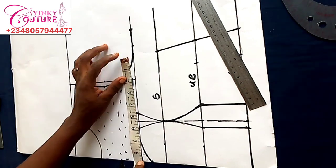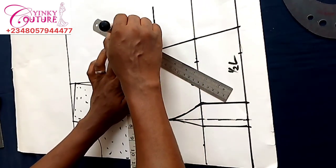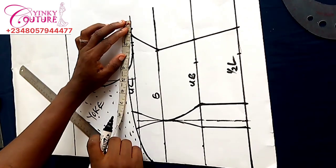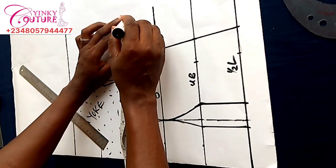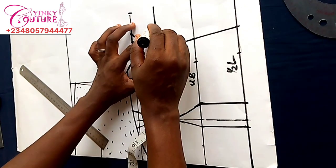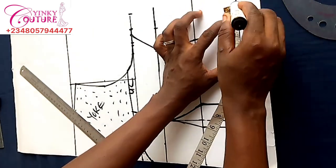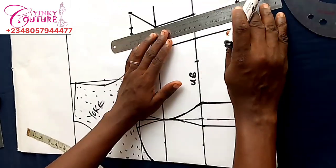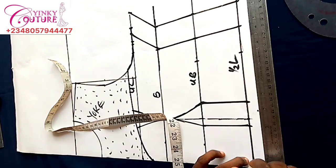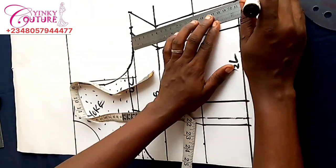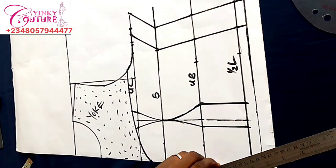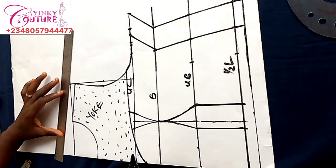I connect all the measurements with my straight ruler. I needed to take this measurement again — there was an error which I have now corrected. After that, sewing allowance of 1.5 inches will be added all through, and that's what I'm adding now. After adding the sewing allowance of 1.5 inches, I connect with my ruler.